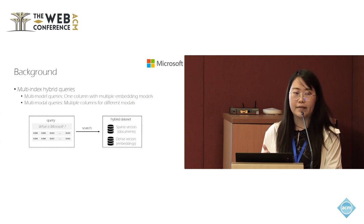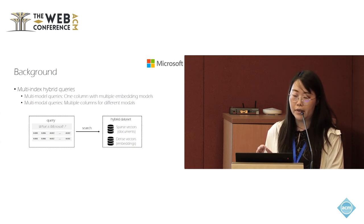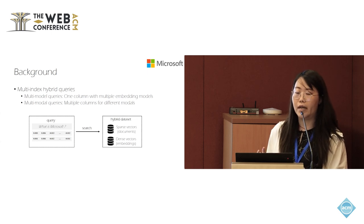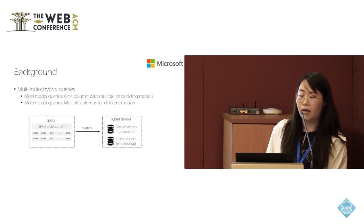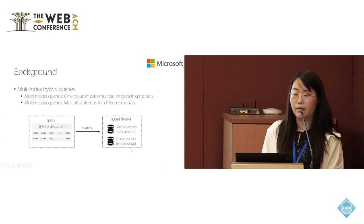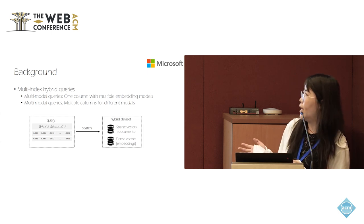Term-based sparse vectors are more suitable for keyword matching tasks. Therefore, multi-index hybrid queries, including multi-vector ensemble queries and multi-modal queries, are widely adopted. They try to do hybrid search among different vector indexes and then finally do the intersection to get the final results.